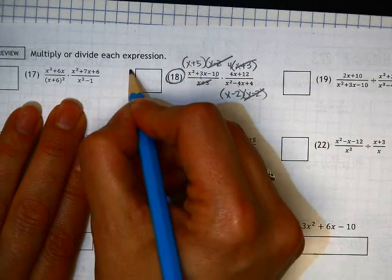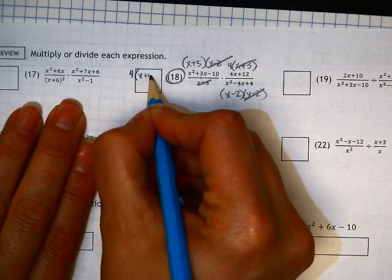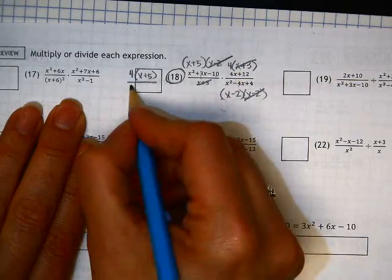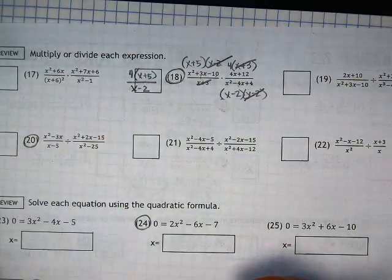Looks like about it. So I have 4 times x plus 5 on the top and x minus 2 on the bottom.